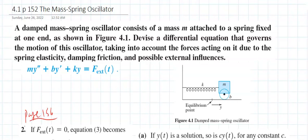Section 4.1 talks about mass-spring oscillation — specifically a damped mass-spring oscillation consisting of a mass M attached to the spring, fixed at one end as shown in figure 4.1. We devise a differential equation that governs the motion of this oscillation, taking into account the forces acting on it due to spring elasticity, damping friction, and possible external forces.